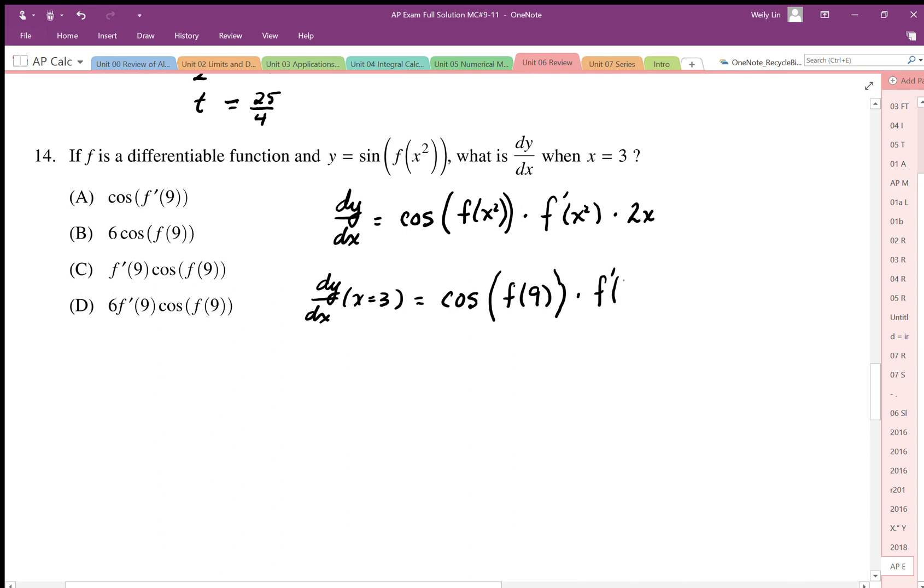When x is squared, that's going to be the input is 9. Here we can actually substitute and we get 2 times 3 equals 6. Rearranging this, the answer looks like it's going to be D. Let me rearrange to make sure it works out. So 6, just rearranging my factors, times f prime 9 times cosine of f of 9. The answer is D.